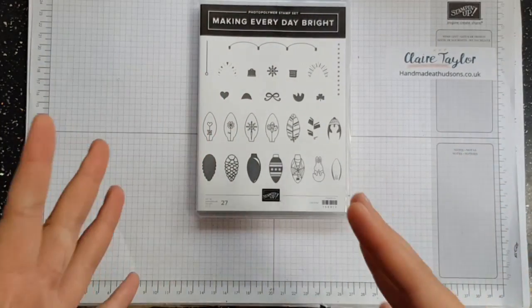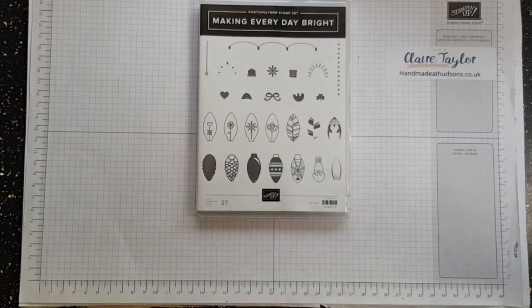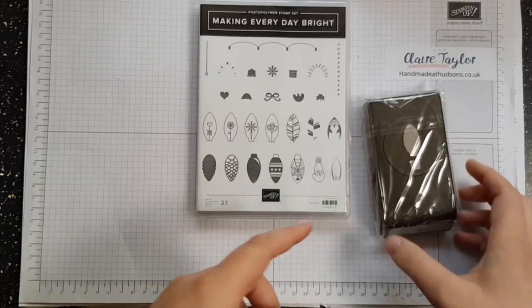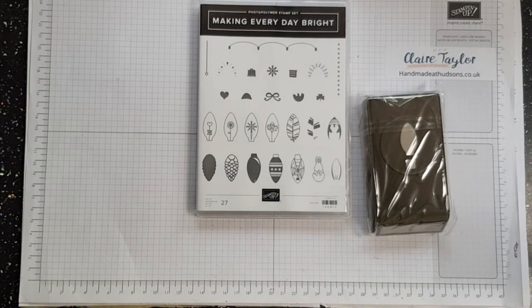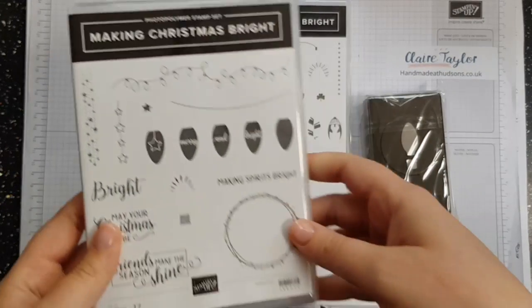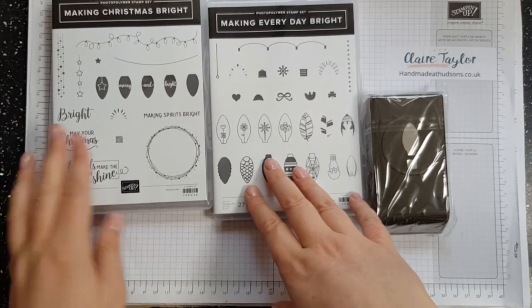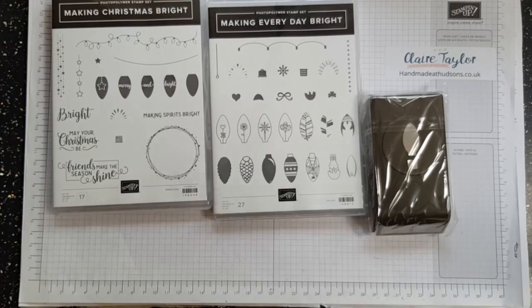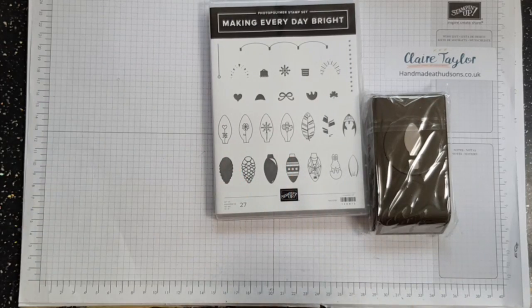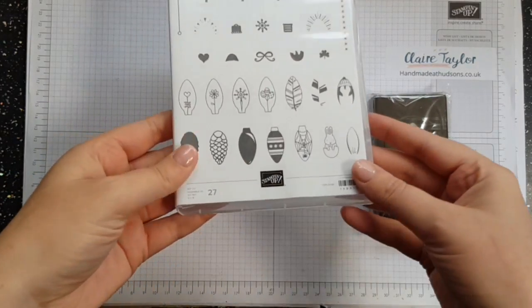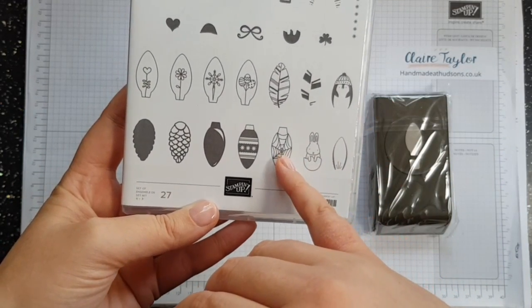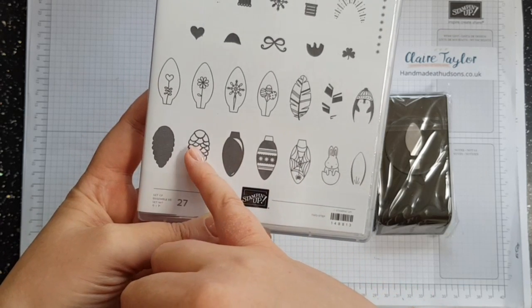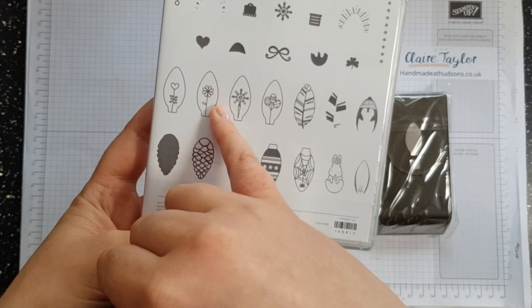Stamp set, oh look at this, this is amazing. This is something I was like oh I want this. So this is another stamp set that goes with the punch. The bundle stamp set is the one I showed you yesterday, making Christmas bright, and this is the extra one. I'm so excited, I can't wait to be able to use this one. This is probably going to be one of the first things that I make examples with, I love it.